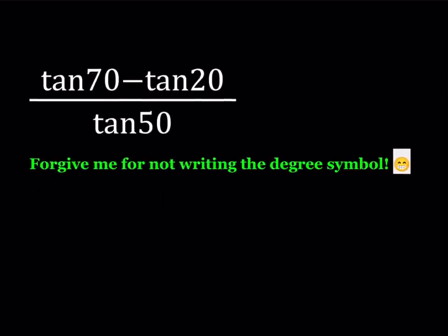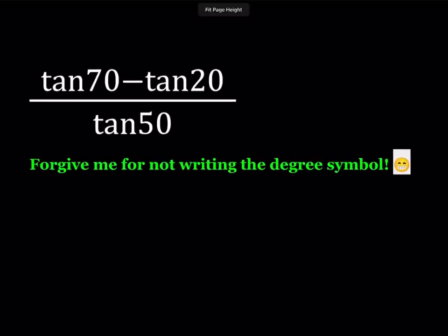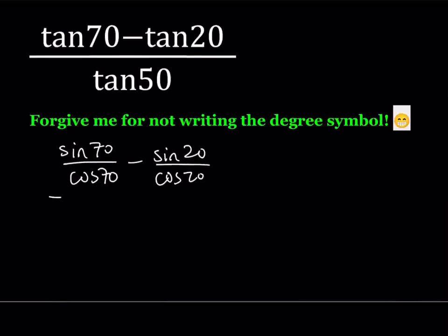Let me write it this way without using the degree symbol, hopefully you'll forgive me for that. So we have tangent 70 minus tangent 20 divided by tangent 50. Let's go ahead and use the identity tangent alpha equals sine alpha over cosine alpha. So this is going to give me sine 70 over cosine 70 minus sine 20 over cosine 20, and that's going to be divided by sine 50 over cosine 50.